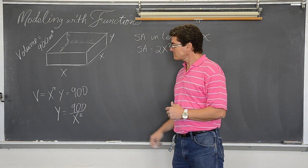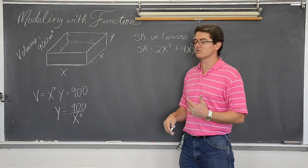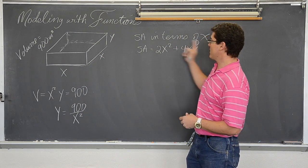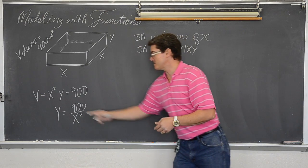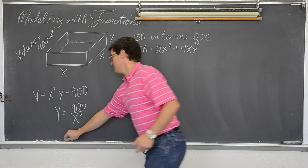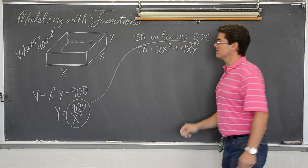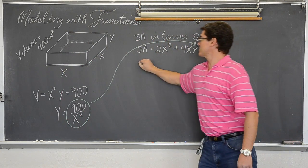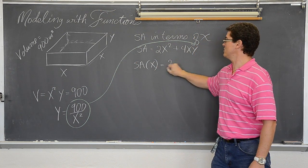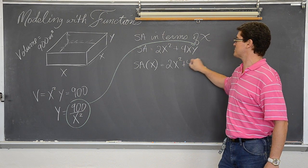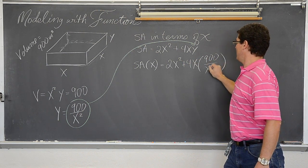Aha! So I don't want the surface area of any normal rectangular solid with a square base. I want that rectangular solid to have a volume of 900. That allows me to take out y and in its place plug in 900 over x². That is going in for y. So the surface area in terms of x is equal to 2x² plus 4x times 900 over x². Oh! We are almost done!